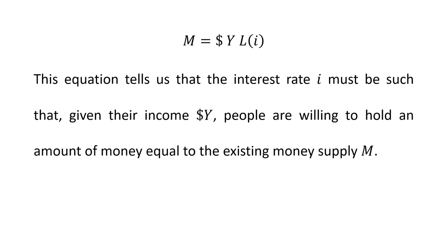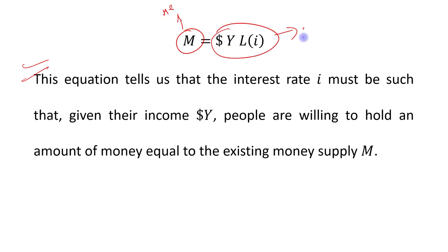This equation tells us that the interest rate I must be such that, given their income dollar Y, people are willing to hold an amount of money equal to the existing money supply M. So this equation relates money supply and money demand as a function of the interest rate.